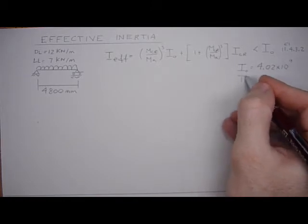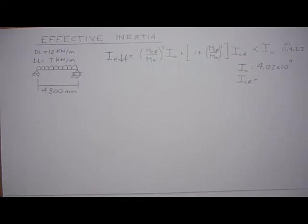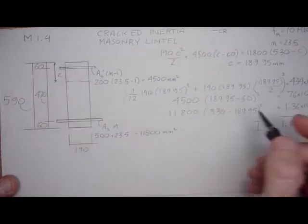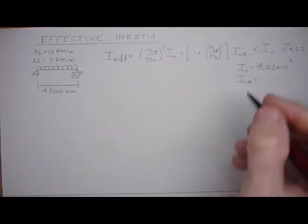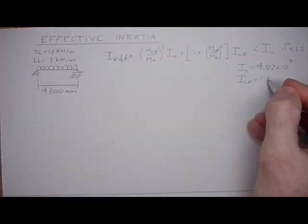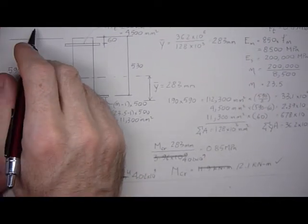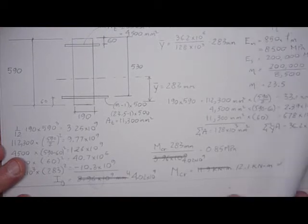And then the I cracked. That was just in the previous tutorial 1.4, 1.87 times 10 to 9 is the I cracked. And then the moment cracking, again that was tutorial M1.3, 12.1 kilonewton meters was the moment cracking.